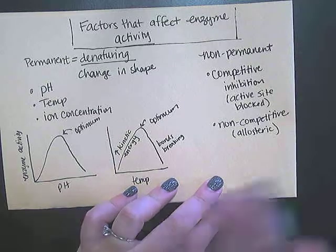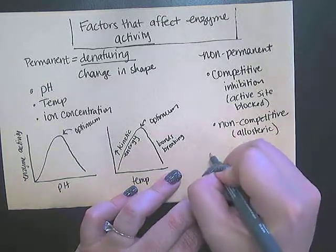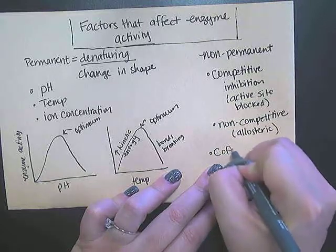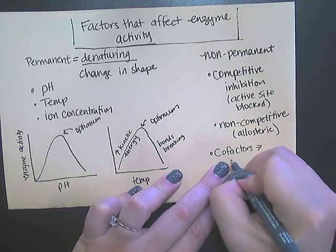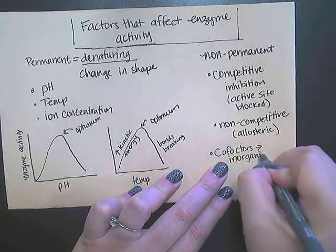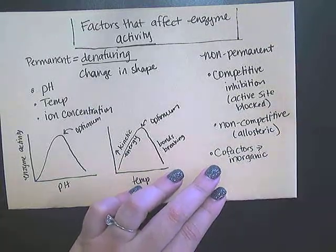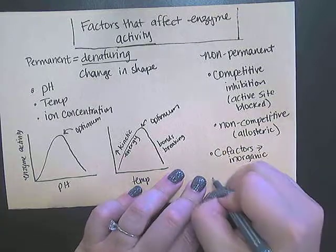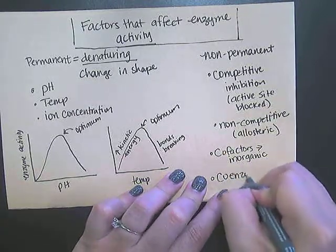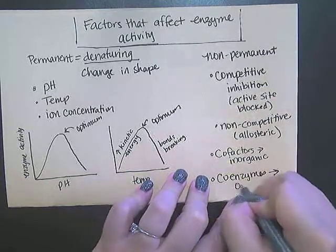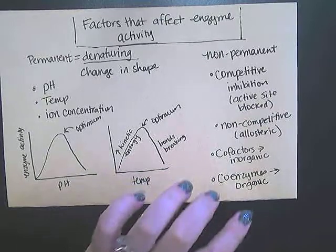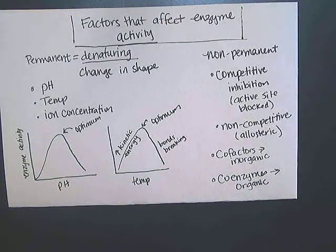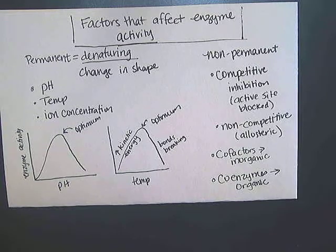Ways to either decrease or increase enzyme activity also include cofactors. These are inorganic enzyme helpers, so they can help enzymes function better. You also have coenzymes, which are organic enzyme helpers. So all of these are factors that will affect enzyme activity, depending on whether you're talking about a permanent change or a non-permanent change. You need to be able to tell the difference between these two. I hope this video helps!